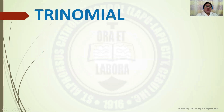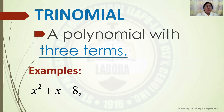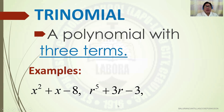The third classification is trinomial. It is a polynomial with three terms. Examples: x squared plus x minus 8 — the three terms are separated by a plus sign and a minus sign. Another example: r to the exponent of 5 plus 3r minus 3 — there are three terms. Next example: 5x squared plus 2x minus 7 — still three terms.